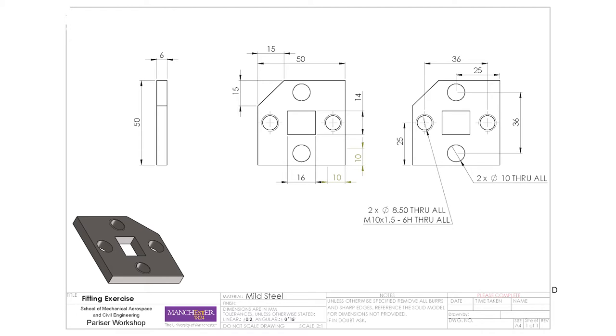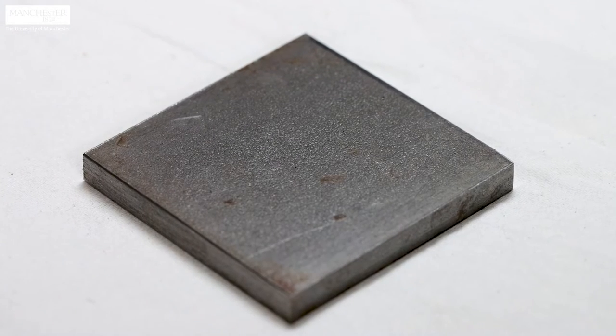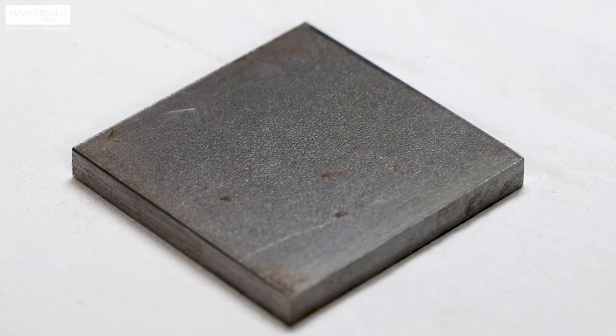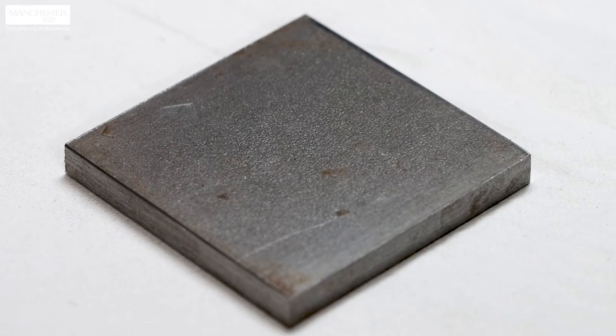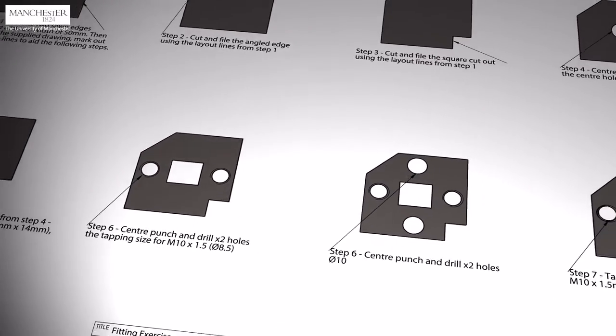Here is a drawing of the part that we will produce today. We will work on a 6mm thick mild steel plate. This is a saw cut piece with a rough face at one side. We split the procedure into several steps as shown in the bottom figure.